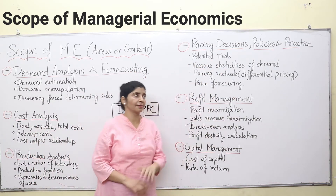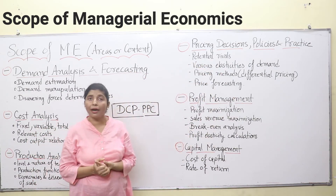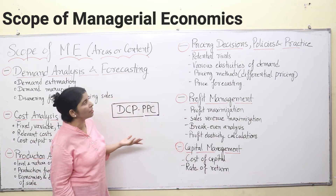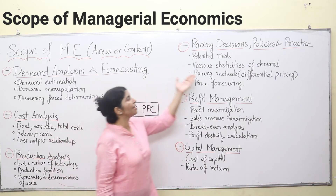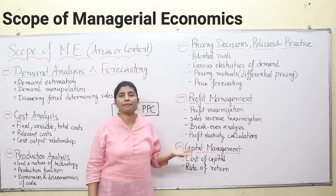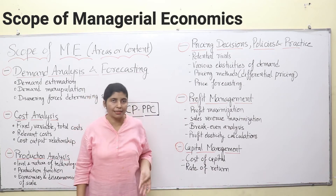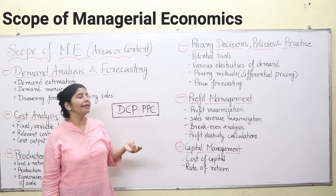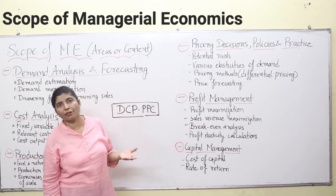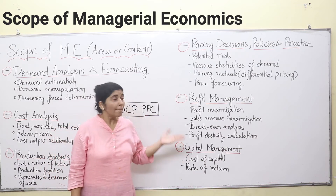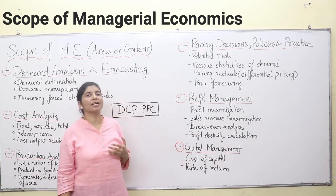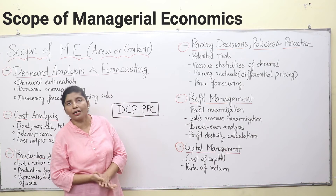Then, pricing decisions, policies, and practices. Pricing decisions are very important. You need to see potential rivals in the market — that means competition. You need to study various elasticities of demand. Things which are inelastic — like medicines, eatables, tea, coffee, salt — are things consumers must consume. So you can increase the price of these products. But if things are not essentials, if they can be dispensed with, then you cannot increase their prices.